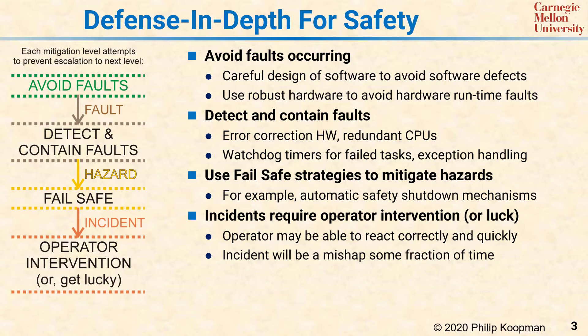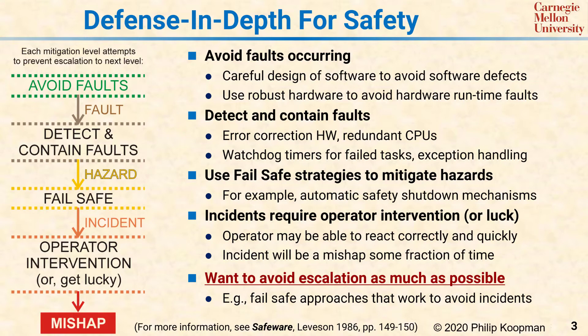Some fraction of the time, an incident will happen in an unlucky situation and there will be a mishap, sometimes called a loss event. With a mishap, the incident results in personal injury, death, significant environmental damage, and unacceptable business consequence or some other loss that should never have occurred. The key to attending safety is to avoid escalation along the path of fault activating to hazard activating to incident resulting in mishap as much as possible. At each layer, it is important to mitigate all possible problems to the maximum degree practicable to make sure that the small amount of problems that inevitably escape from one level to the next are all taken care of before a mishap can actually occur.